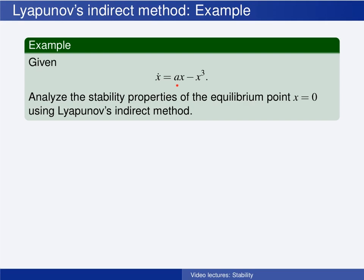Consider the nonlinear system here. The parameter A is a constant, and we do not know its value or sign. Regardless of the value of A, this system always has an equilibrium point at the origin. If A is a positive constant, then in addition to the equilibrium point at the origin, there are two additional equilibrium points at plus and minus the square root of A. We are only interested in the equilibrium point at the origin here.